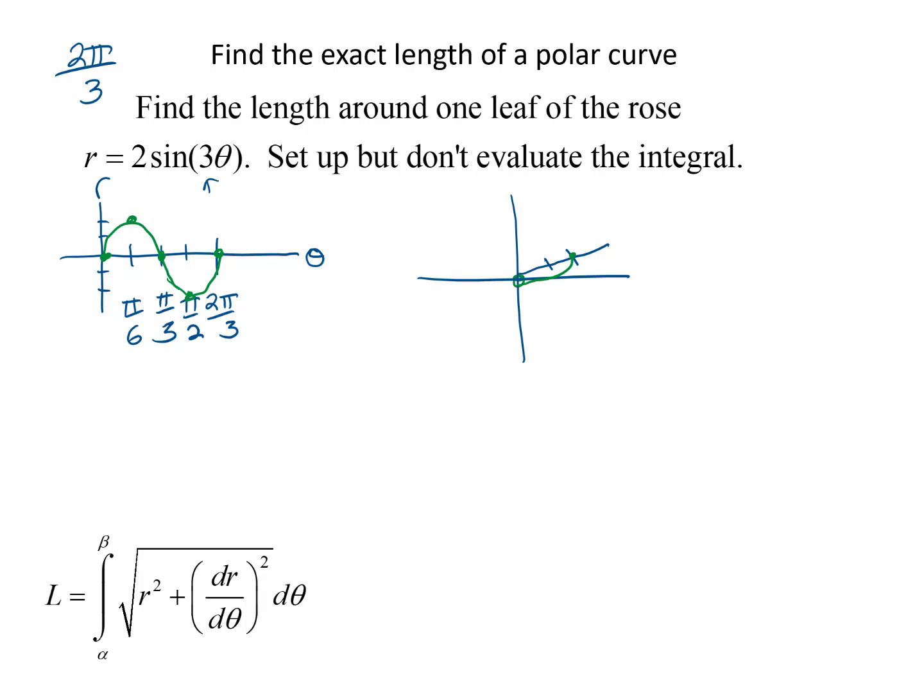And then by the time we get to π/3, we're back here to the pole. Now we just needed one leaf, so we don't need to finish drawing that. We now know that we want to go from 0 to π/3 to trace out one leaf.